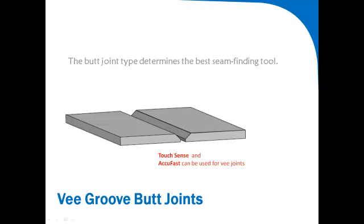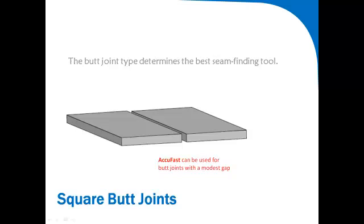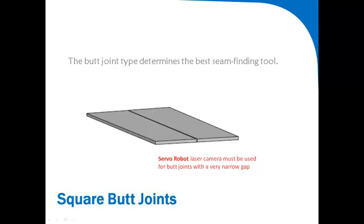V-Groove butt joints can be detected using all three seam finding tools. TouchSensing requires more significant joint wall surface and is best used for thicker parts. AccuFast can be used for thinner parts and can also detect square butt joints with a modest gap. An edge detect macro routine provides gap width measurement. Laser cameras can find tightly spaced butt joints or joints with very thin material.